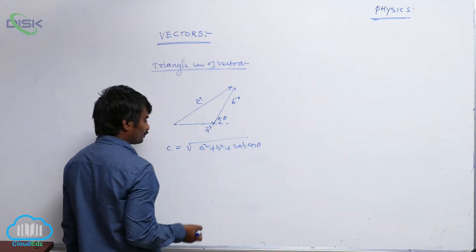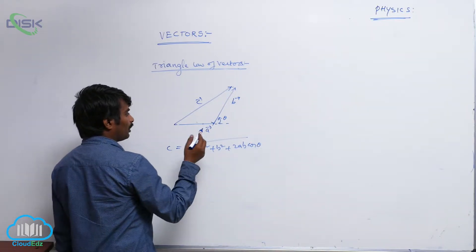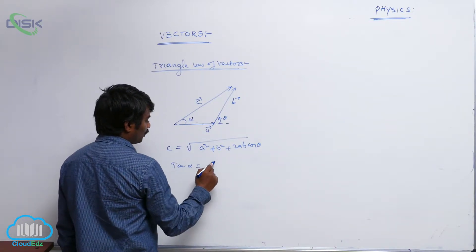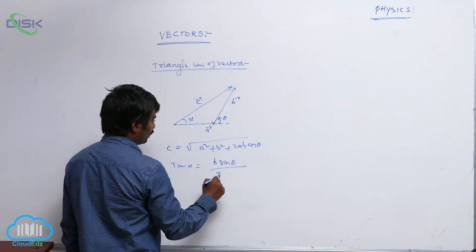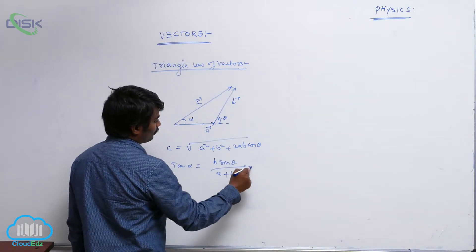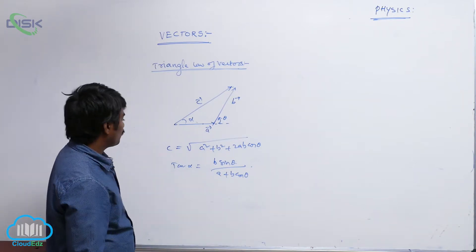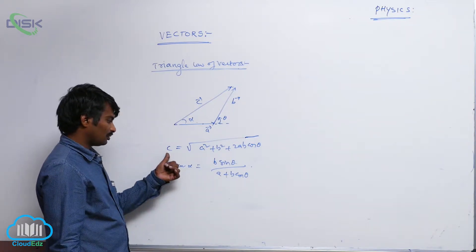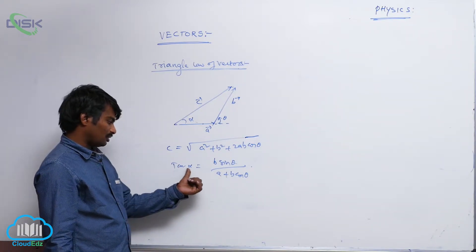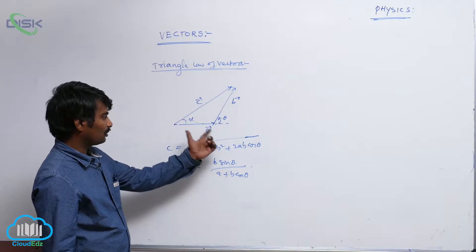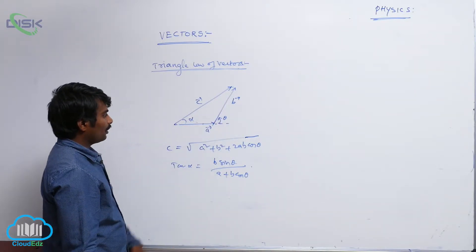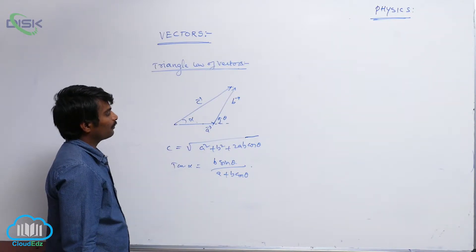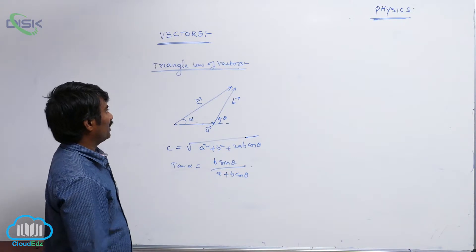The angle made by the resultant with vector a is alpha, so tan α = b sinθ / (a + b cosθ). Some teachers prefer to explain the addition of two vectors — to calculate the magnitude and direction of the resultant — using the triangle of vectors, while I prefer the parallelogram of vectors.